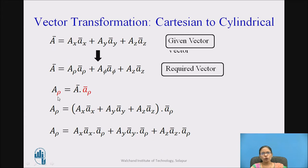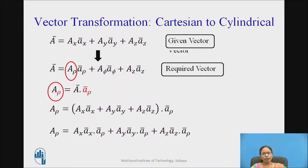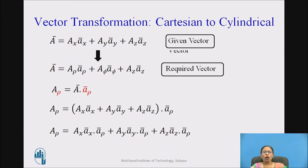So how can I proceed? When finding a_rho, I should take the dot product of the given vector with the unit vector a_rho-bar. So a_rho equals a-bar dot a_rho-bar, which expands to: Ax·ax-bar plus Ay·ay-bar plus Az·az-bar, all dot product with a_rho-bar. Simplifying, I can write: Ax·(ax dot a_rho) plus Ay·(ay dot a_rho) plus Az·(az dot a_rho).